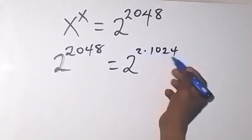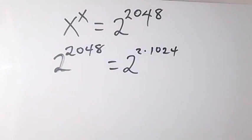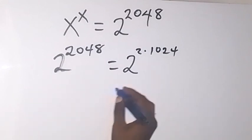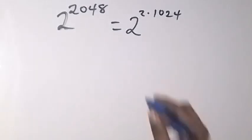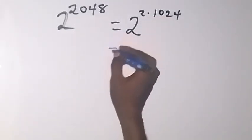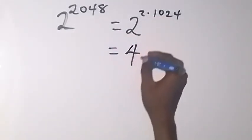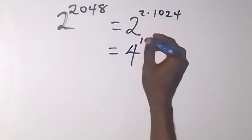Because 2 times 1024 gives us 2048. And of course this will become, so I can equally write since 2 raised to power 2 is 4, we can say this is 4 raised to power 1024.